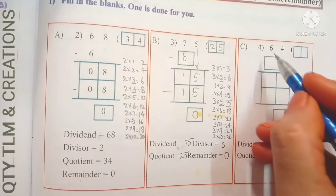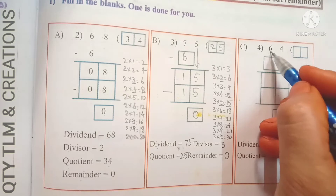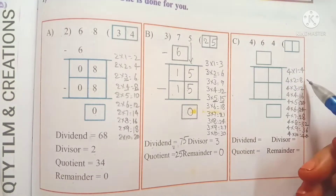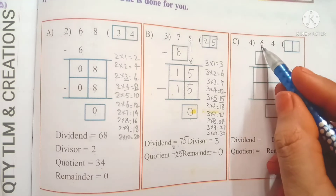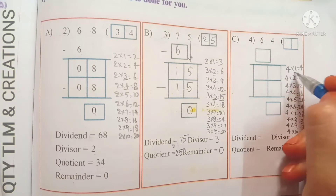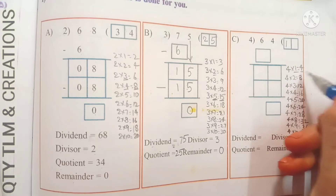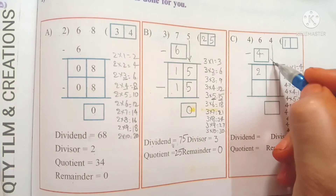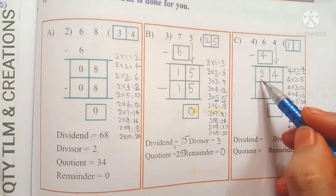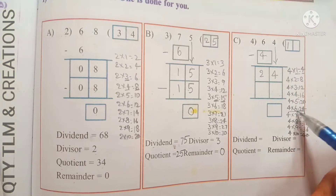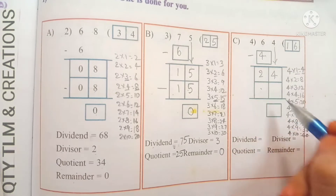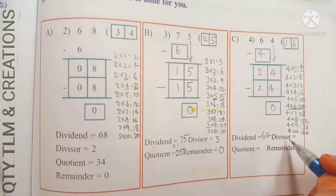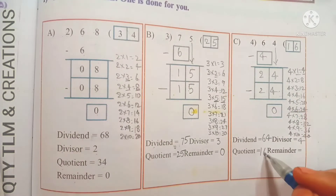Next: 64 divided by 4. Division starts from the highest place value, which is 6. Observe the 4 times table — 4 twos are 8, and 4 ones are 4. Since 8 is bigger than 6, we take 4 ones are 4. Write 1 in the quotient's place and 4 under 6, subtract: we get 2. Bring down 4; it becomes 24. 4 sixes are 24, so write 6 in the ones place. Write 24 under 24 and subtract: we get 0. Dividend is 64, divisor is 4, quotient is 16, remainder is 0.